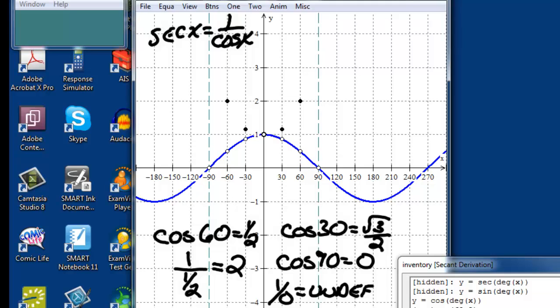If we take the reciprocal or 1 over values that are getting smaller and smaller, we'll see that they grow and get larger and larger.